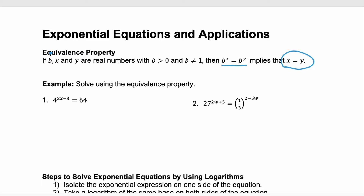Let's look at two examples. The first: we have 4 to the power of 2x minus 3 and it's equal to 64. Recall that 64 is the same as 4 to the power of 3, so rewrite that left hand side. Now you can see that the left side and the right side both have exponents and they both have bases of 4. That means we can use the equivalence property and set those exponents — 2x minus 3 — equal to 3.